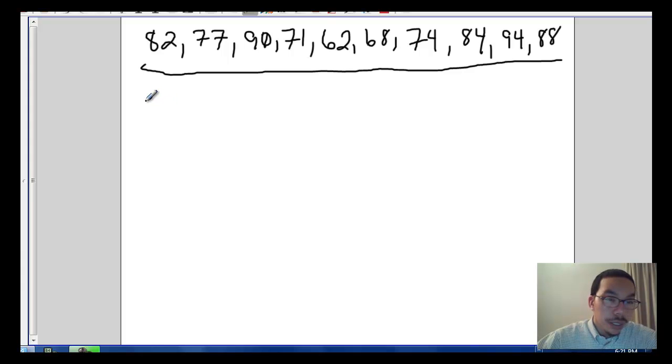So the first row will be the x sub i's, the scores, and they're 82, 77, 90, 71, 62, 68, 74, 84, 94, and 88.